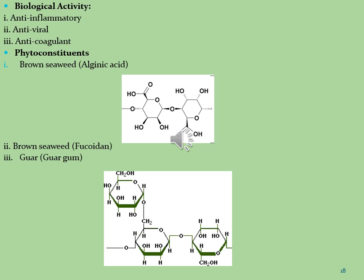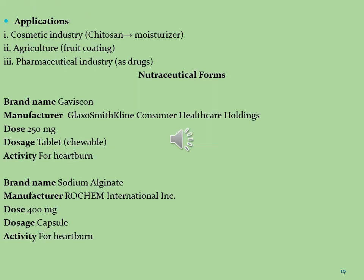The second phytoconstituent is fucoidan, also isolated from brown seaweeds. The third phytoconstituent is guar gum, isolated from the seeds of the family Leguminosae. Guar gum is used as a laxative and for treating diarrhea, irritable bowel syndrome, obesity, and diabetes, for reducing cholesterol, and for preventing hardening of the arteries. In foods and beverages, guar gum is used as a thickening, stabilizing, suspending, and binding agent. In pharmaceutical industries, carbohydrates are used as drugs as well as excipients and preservatives. In cosmetics, chitosan is used as a moisturizer; in agriculture, it is used as a food coating agent.